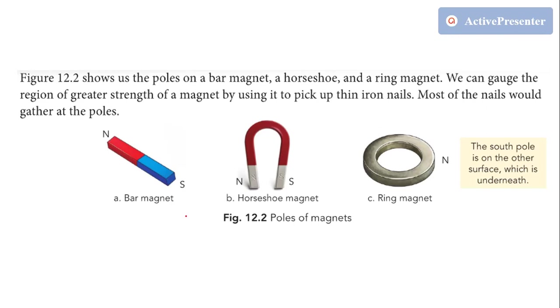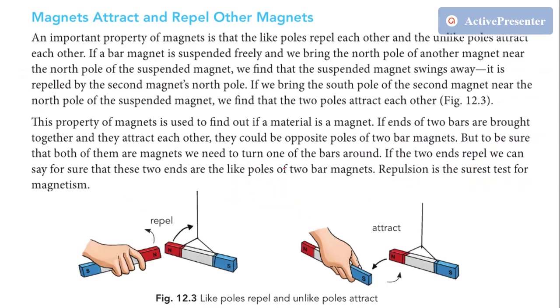Now here some poles of different types or different shapes of magnets are given. This is the bar magnet with poles at both ends, one end north and another end south. This is the horseshoe magnet with one pole here and another pole there. Also this is a ring magnet, meaning its upper surface is the north pole and lower surface is the south pole. So the greater strength of a magnet will be at their poles, meaning north pole and south pole have more strength of the magnet.